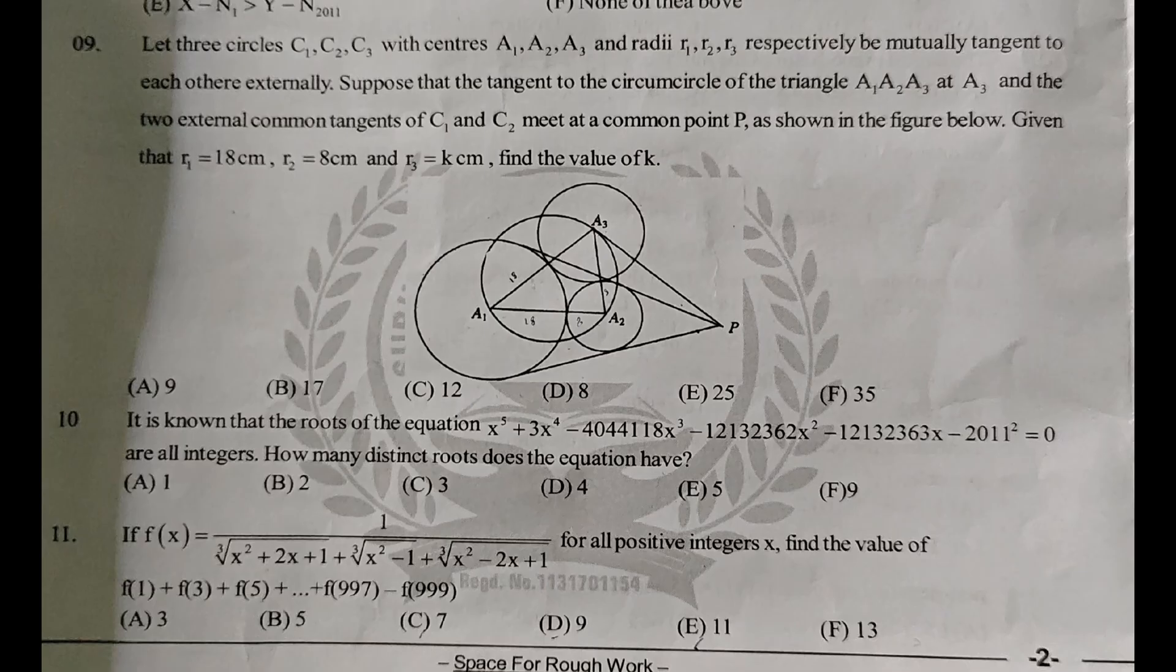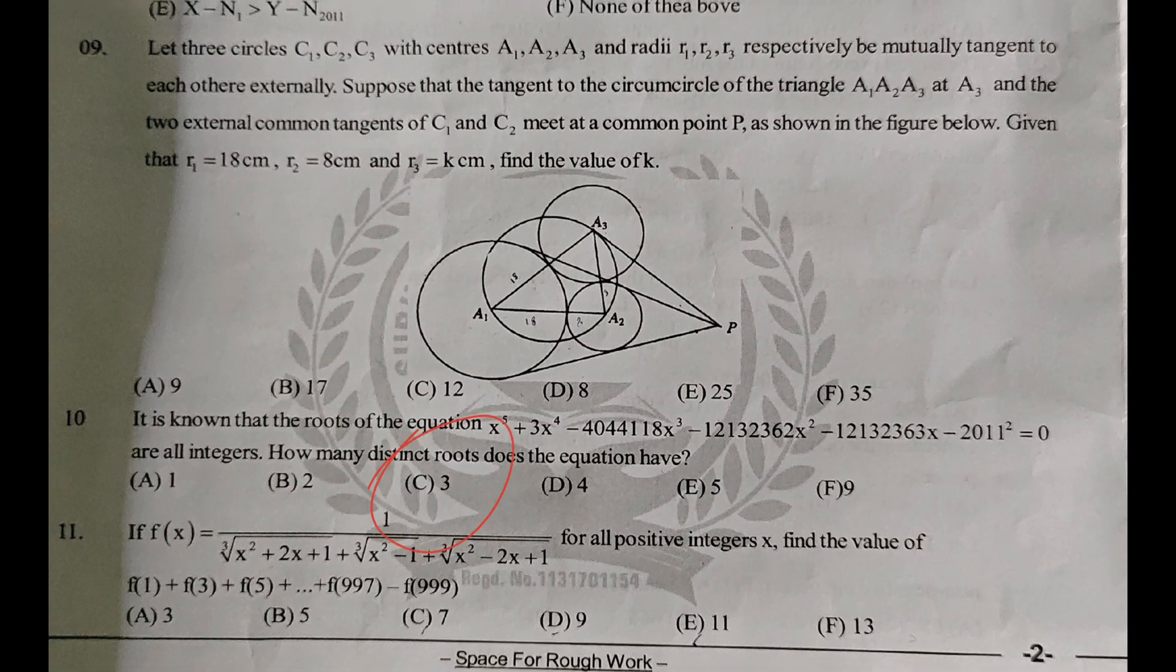Let 3 circles C1, C2, C3 with centers A1, A2, A3 and radii R1, R2, R3 respectively be mutually tangent to each other externally. It is known that the roots of the equation are integers. The answer is C3.